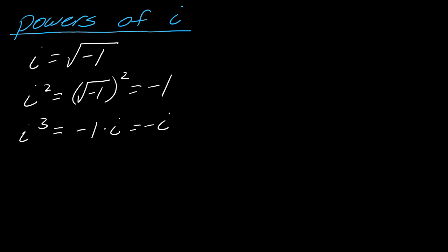And now if I do i to the fourth, think about this. i to the third is negative i. So I want to multiply negative i times i again. What does this equal? This equals negative i squared. Well, i squared is just negative 1. So this becomes negative 1 times negative 1. This just ultimately equals 1.